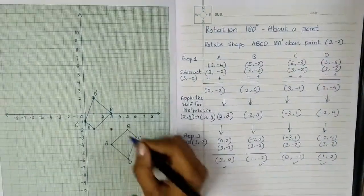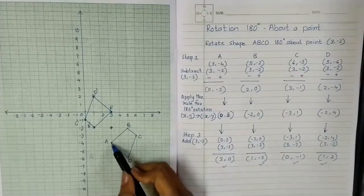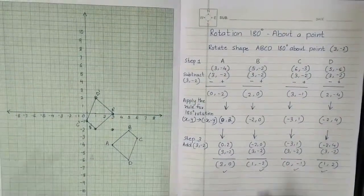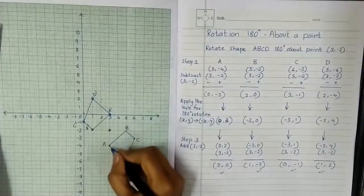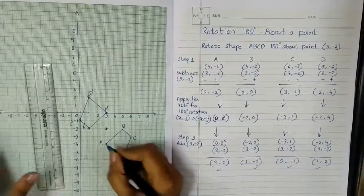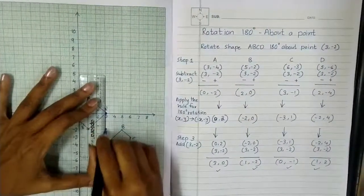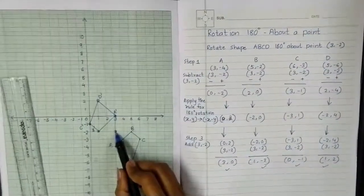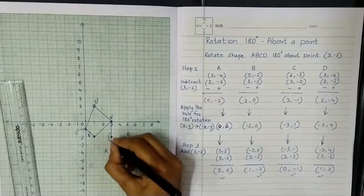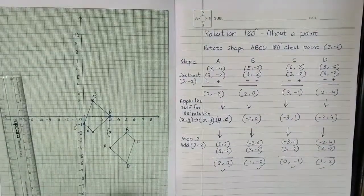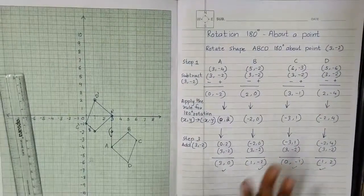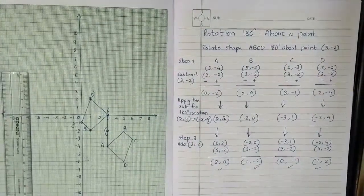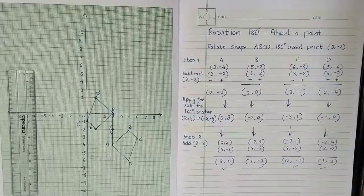And this is how my shape looks after 180 degree rotation about point (3, -2). For a simple cross-check, I select points A and A dash and join a straight line — you can see that the line passes through the center of rotation (3, -2). A straight line means an angle of 180 degrees, which clearly indicates that the working and plotting we did is absolutely correct. This is how we rotate a given shape 180 degrees about a given point.